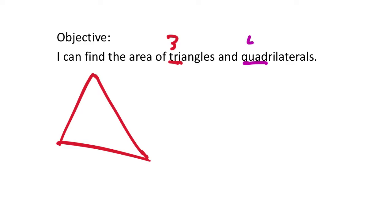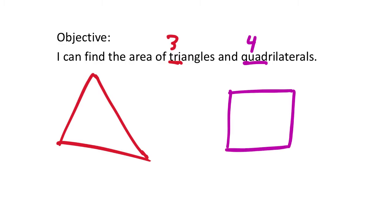Quad, though, is four. So a very common quadrilateral would be a square. Squares, rectangles — those are the two most common types of quadrilaterals. We're going to look at some others today as well. But remember, it's a four-sided shape that just needs to close.